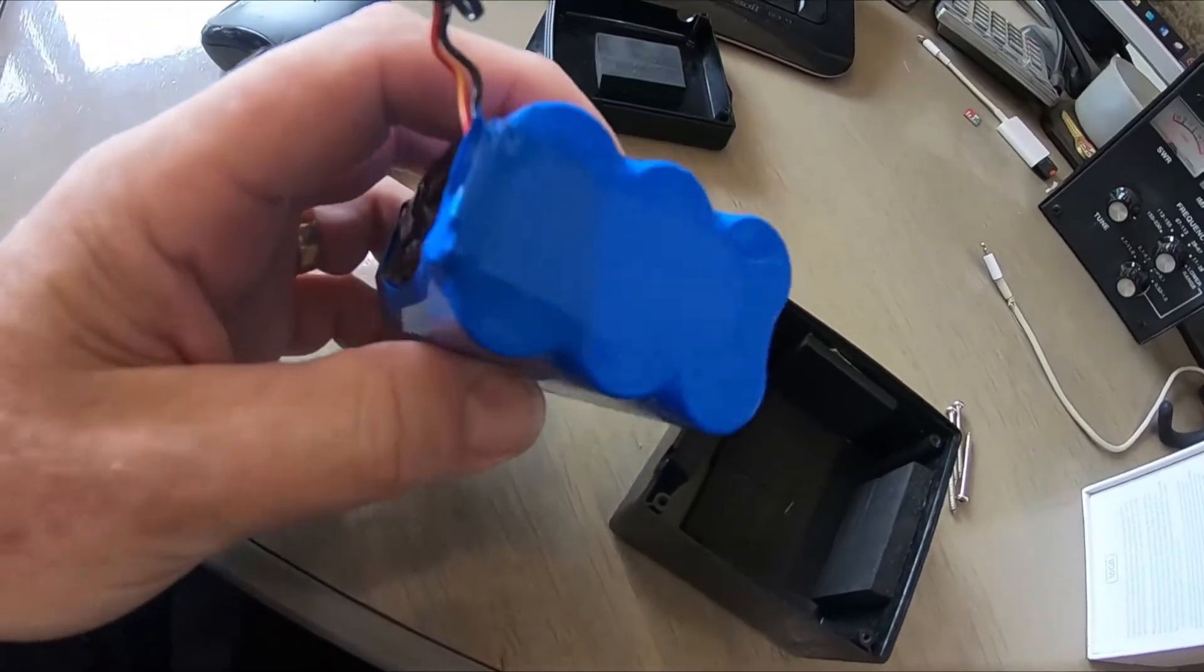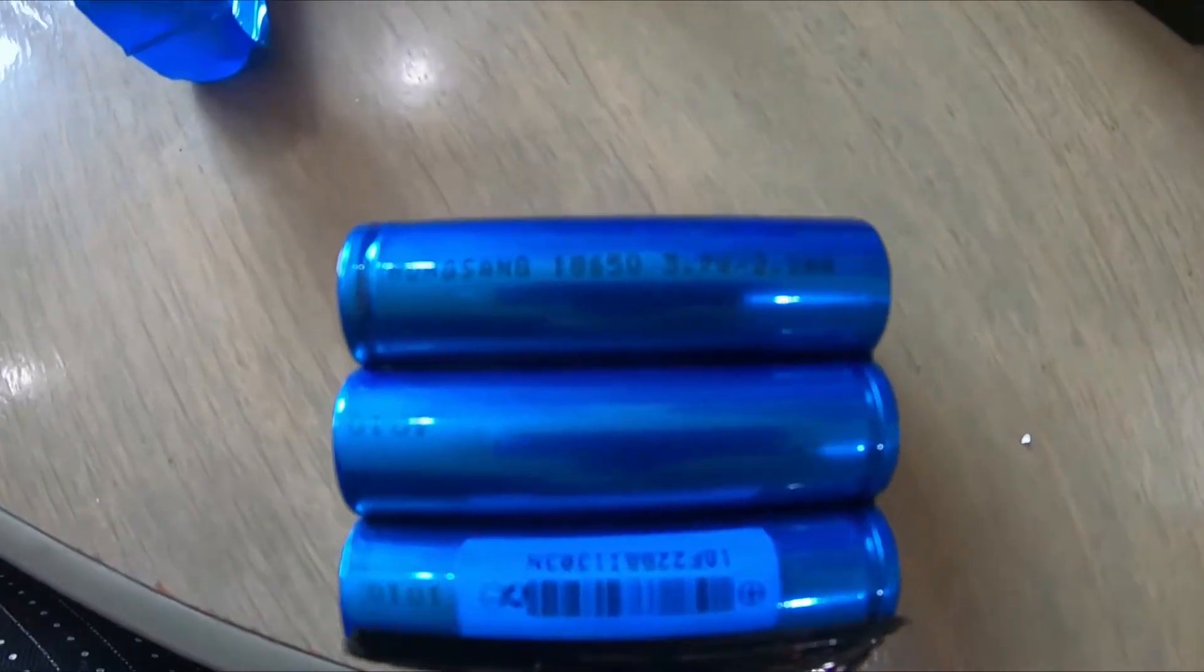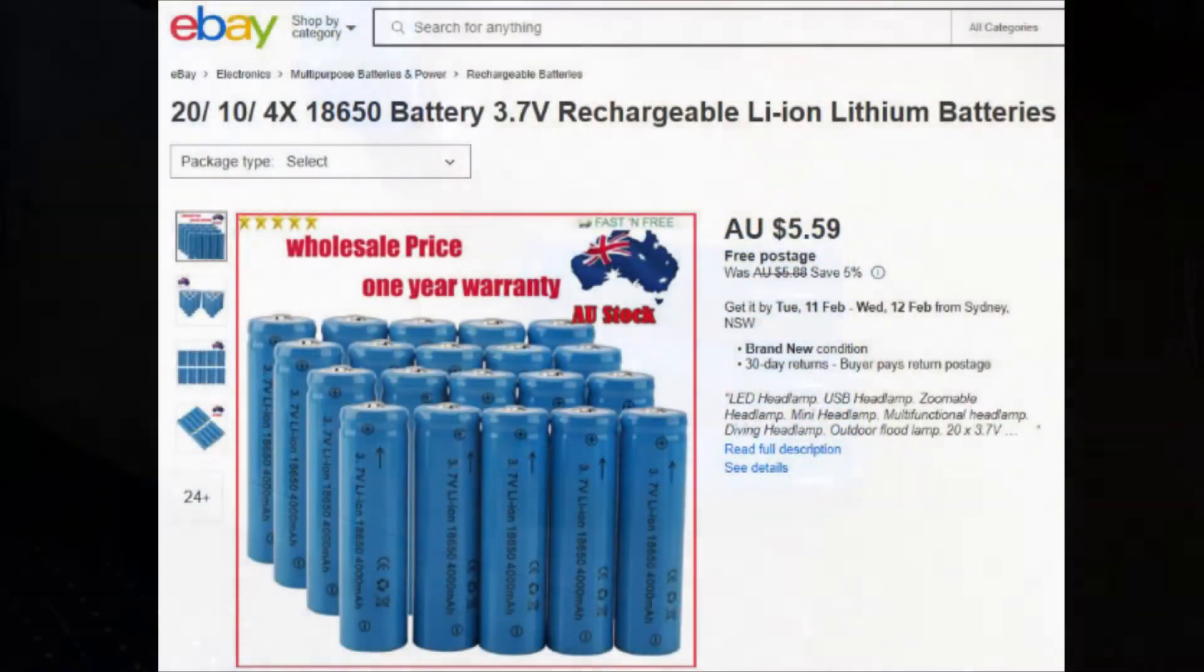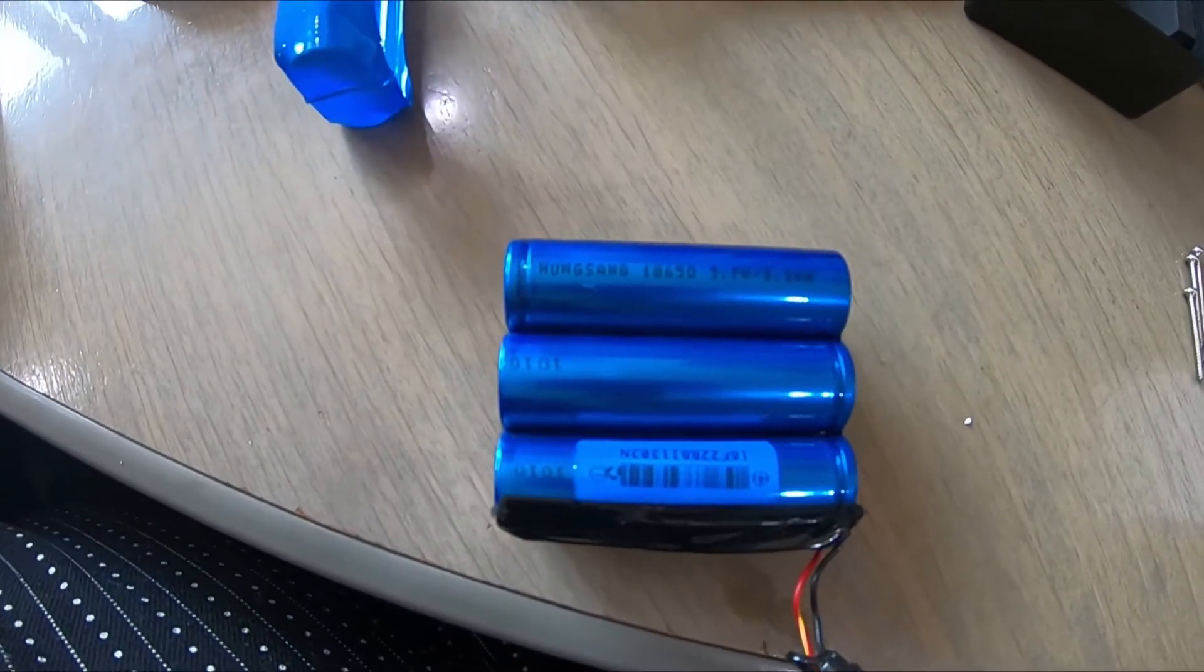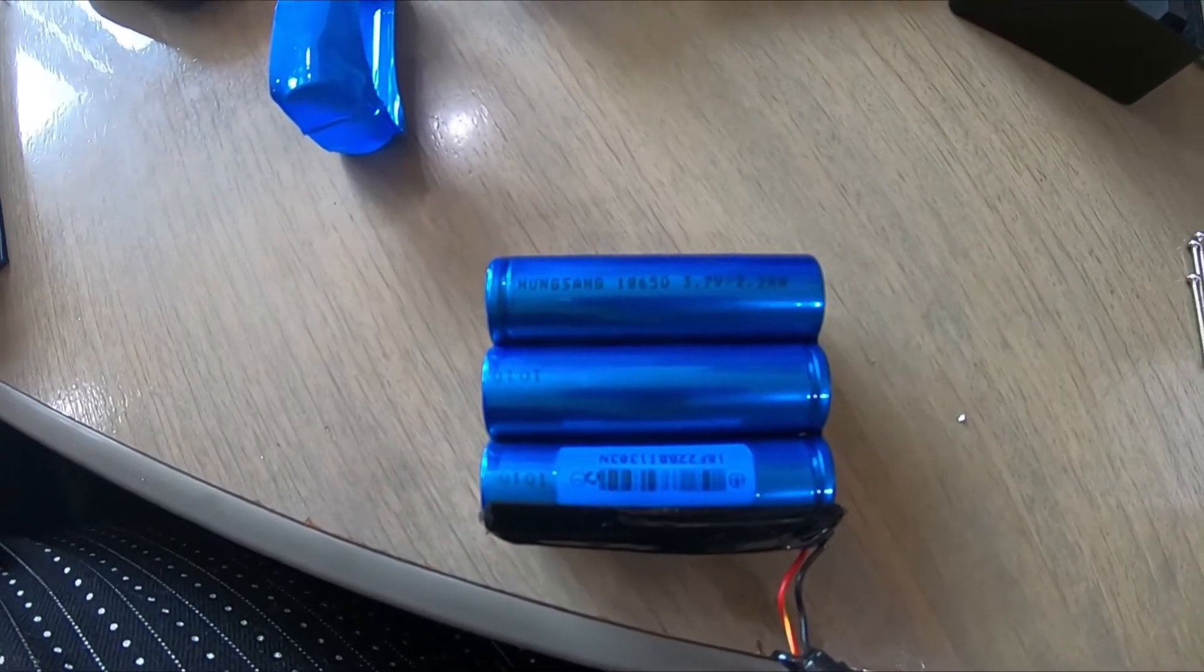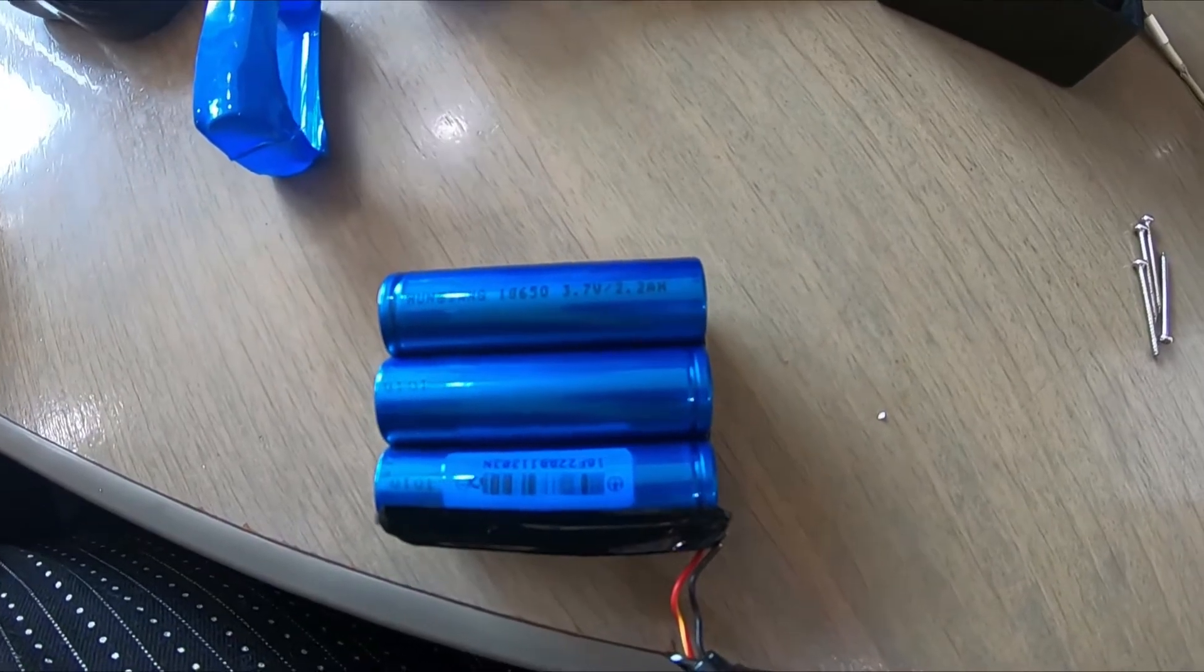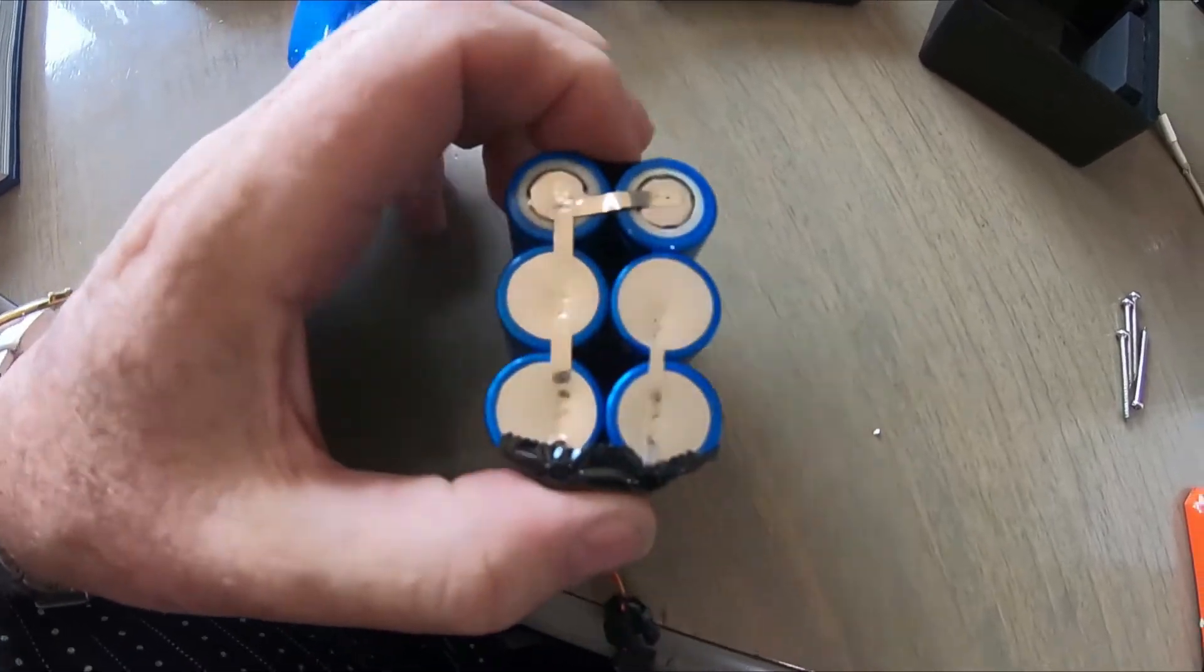So I'm not sure how readable this is going to be, probably not very. I'll insert a still shot. But it's a Hung Same 18650, 3.7 volts, 2.2 ampere hours, and they just kind of got this electrical welding arrangement on top.